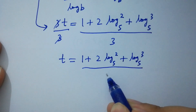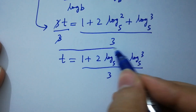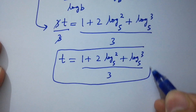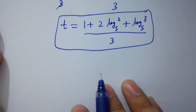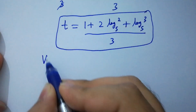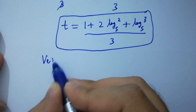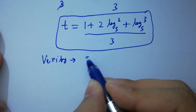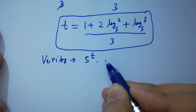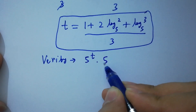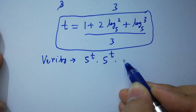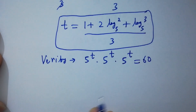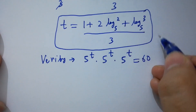We get the value of t which is equal to 1 plus 2 log 2 to the base 5 plus log 3 to the base 5, all over 3. In the next step I am going to verify: 5 to the power t times 5 to the power t times 5 to the power t equals 60. Put the value of t.